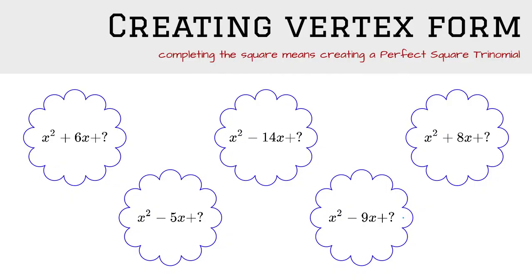Creating vertex form means you complete the square and create a perfect square trinomial in the process. So completing the square means you take the value of b and you half it. So 6 divided by 2, and then you square it to get to the final number, which is 3 squared, which is 9.